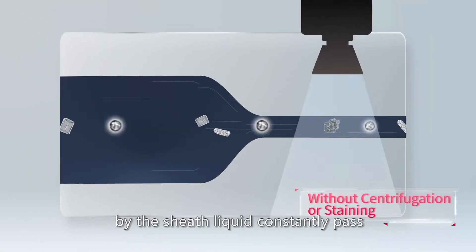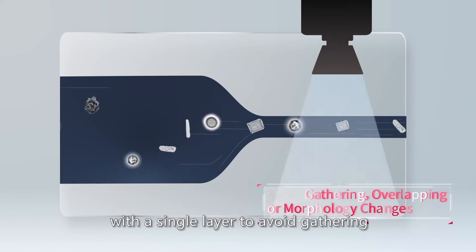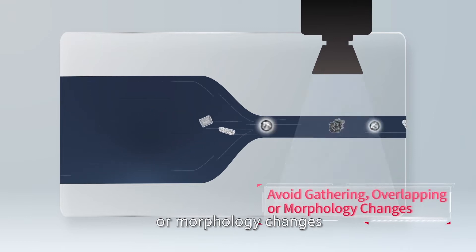The urine-formed elements directed by the sheath liquid constantly pass through the flow cell with a single layer to avoid gathering, overlapping, or morphology changes.